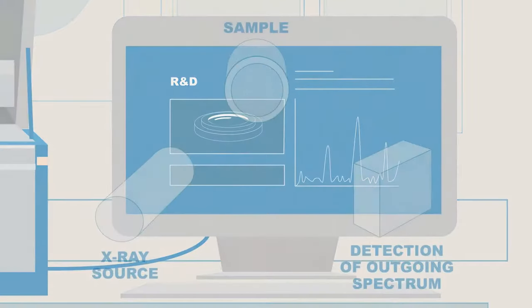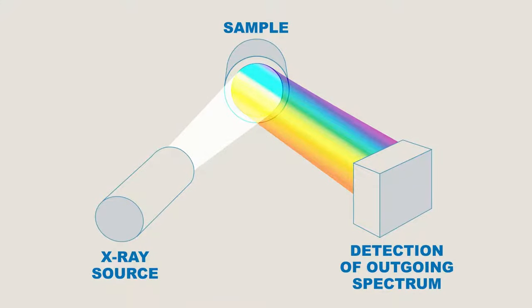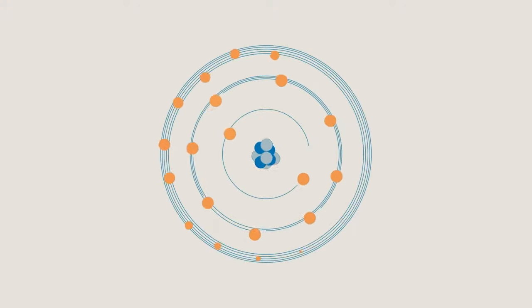An XRF experiment begins by irradiating a sample material with X-rays from an X-ray source. Every material is made up of many atoms, and each atom has a positively charged nucleus surrounded by a cloud of negatively charged electrons.